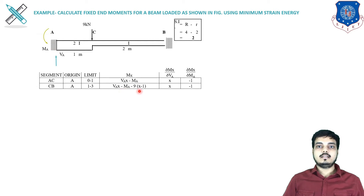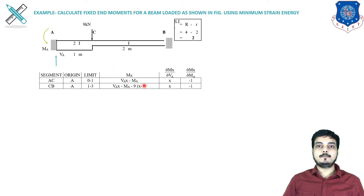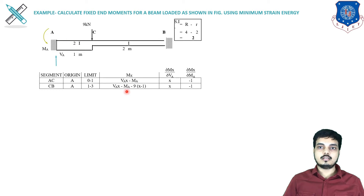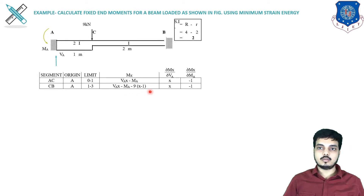Why (x − 1) in the second segment? Because we are taking origin from point A. The x distance is measured from A, but the load is 1 meter away, so we put (x − 1) to account for that 1 meter distance.